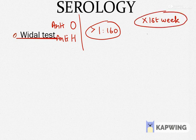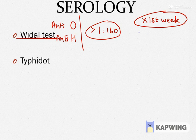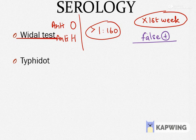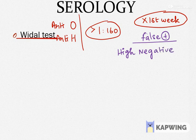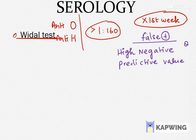If they ask you, is the Widal test diagnostic of enteric fever? Your answer is no, because false positive Widal test has been observed in situations like malaria, typhus, and other bacteremias. The actual usefulness of the Widal test is that it has a high negative predictive value — meaning if the Widal test is negative in the appropriate clinical setting, you can actually rule out the diagnosis of enteric fever. This is an important exam question: what is the usefulness of Widal test? It has high negative predictive value.